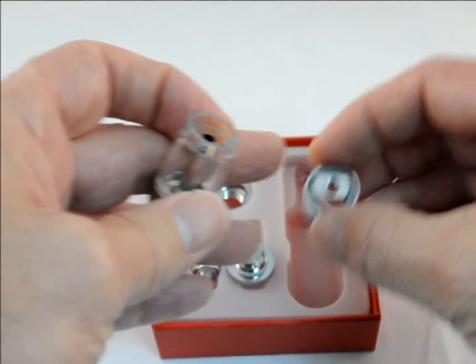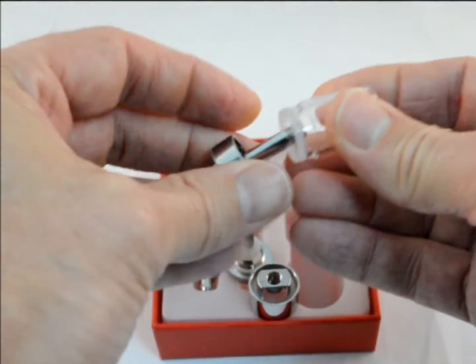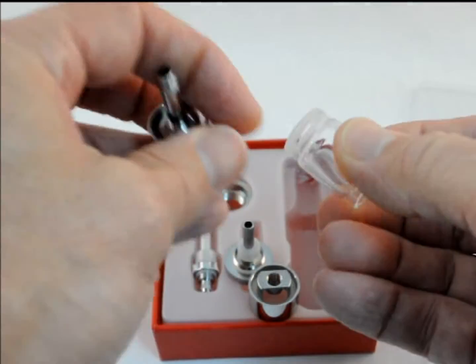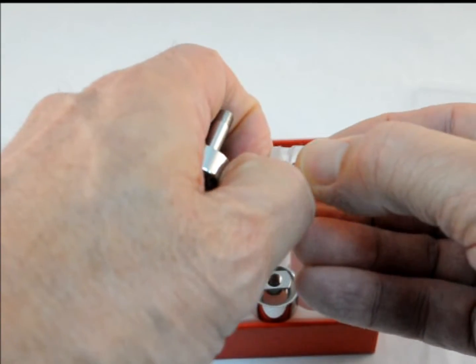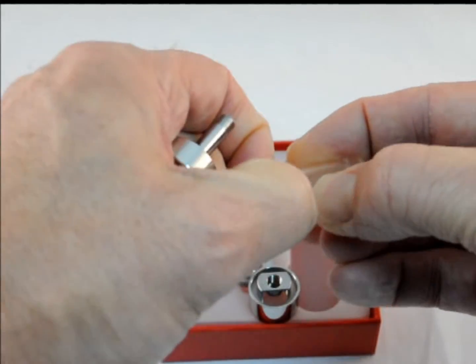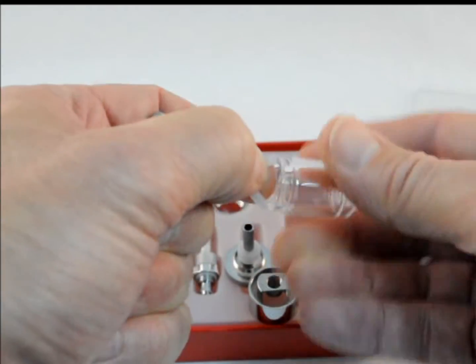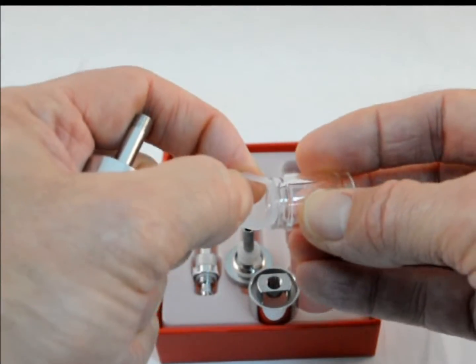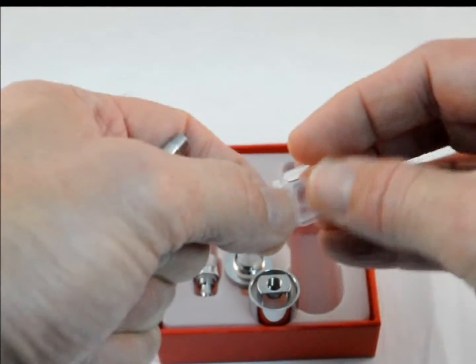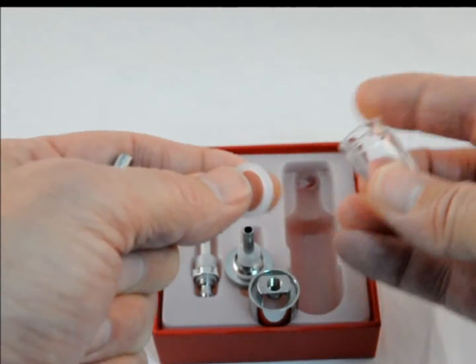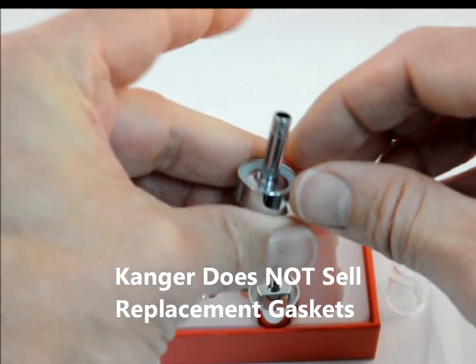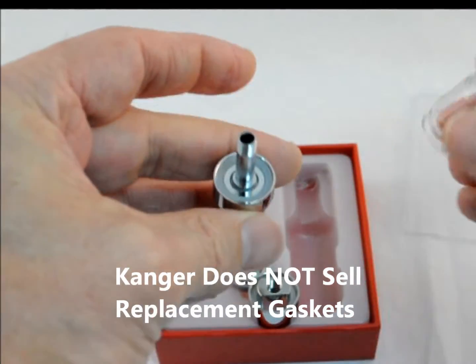You've got the rubber gasket in the bottom and the rubber gasket in the top. Nine times out of ten, whenever I unpackage a Pro Tank 2 or 3, the upper gasket seems to like to stick to the top of the Pyrex. You just take it off gently and replace it where it belongs, and that seems to never happen again once you've done it once.